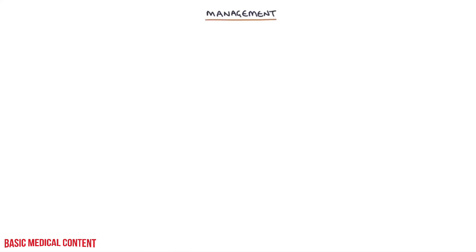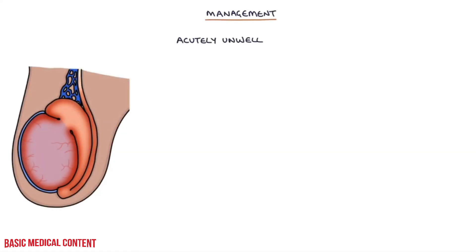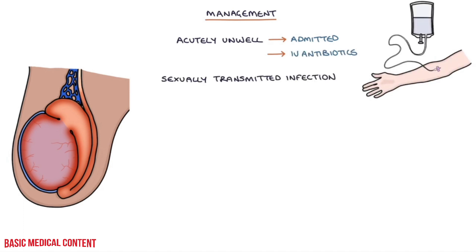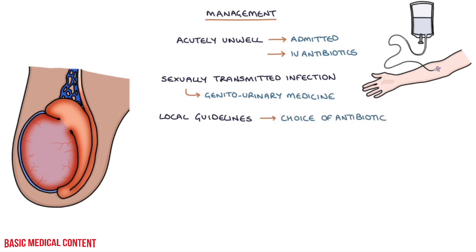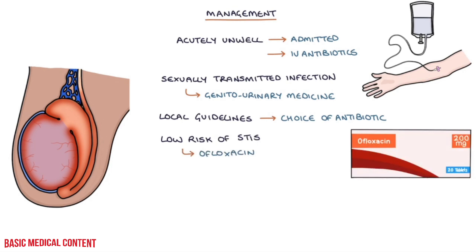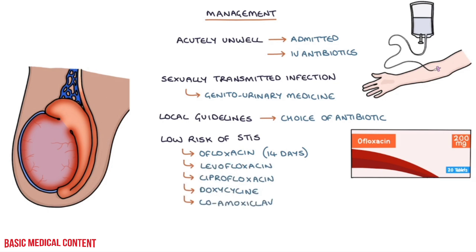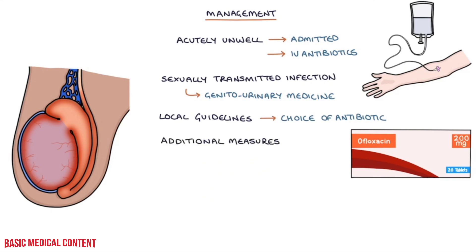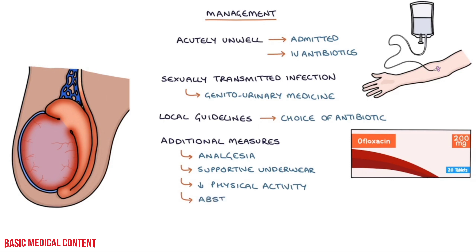Let's talk about management. Acutely unwell or septic patients need to be admitted to hospital for treatment, which will involve IV antibiotics. Patients with a high risk of sexually transmitted infection should be urgently referred to the genitourinary medicine, or GUM, service for assessment and treatment. Local guidelines will guide your choice of antibiotic. For patients at low risk of STIs, a typical first-line choice is ofloxacin for 14 days. Alternatives include levofloxacin or ciprofloxacin, doxycycline, or co-amoxiclav. Additional measures include analgesia such as paracetamol, supportive underwear to support the testicle, a reduction in physical activity, and abstaining from sexual intercourse.